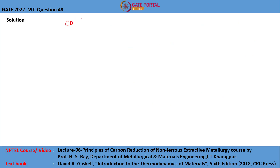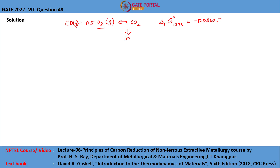Another reaction provided is carbon monoxide plus 0.5 O2 gives carbon dioxide, and the Gibbs energy of reaction at 1873 Kelvin is minus 120860 joules. It must be noted that in the Ellingham diagram, the Gibbs energy of formation of oxides is always taken per mole of the reacting gas species, that is oxygen. So we rewrite this equation in terms of 1 mole of oxygen: 2CO plus 1 mole of oxygen gives 2CO2, and the Gibbs energy of reaction becomes minus 241720 joules.